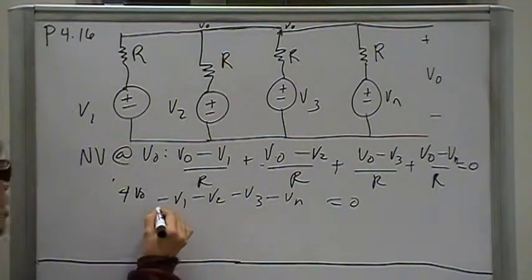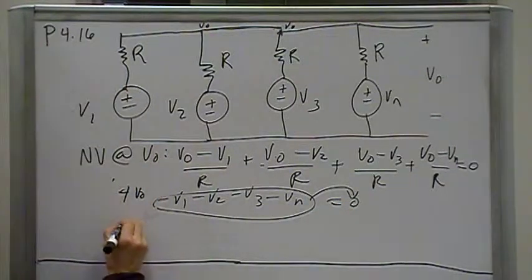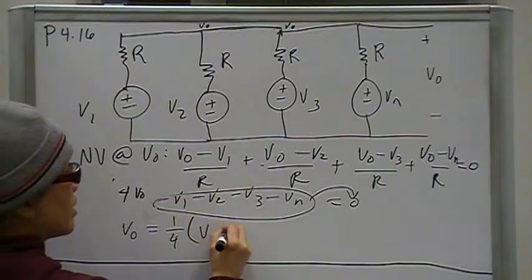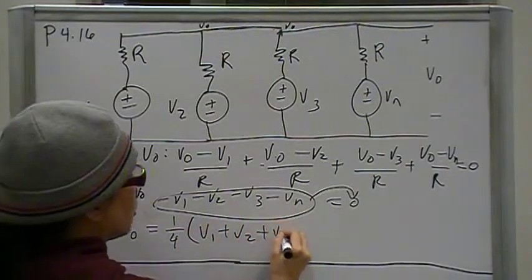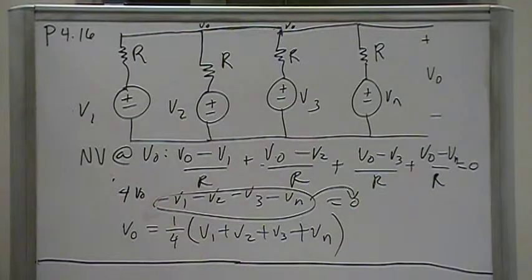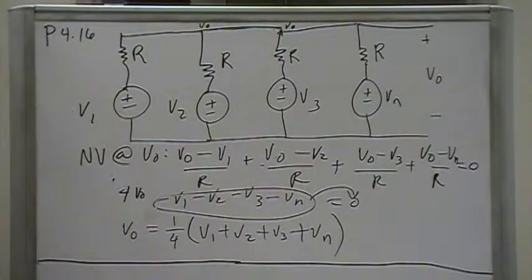Bring these four guys over to this side, and that gives us Vout equals one-fourth times V1 plus V2 plus V3 plus VN. And that is our proof that when the resistors are identical and the top node is Vout, it's going to be the average of the sum of the different voltages. So, that's our proof for part A.